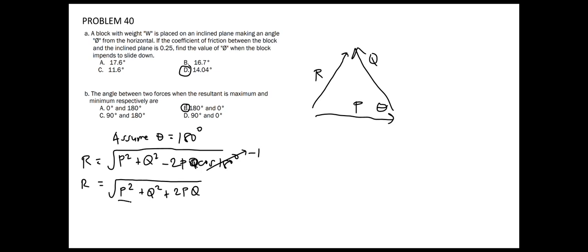And we can do some factoring from this expression. We get square root of P plus Q squared. And the square root of P plus Q squared is just equal to P plus Q. We can see that R is equal to P plus Q, in which P and Q add up each other to produce the maximum resultant force.